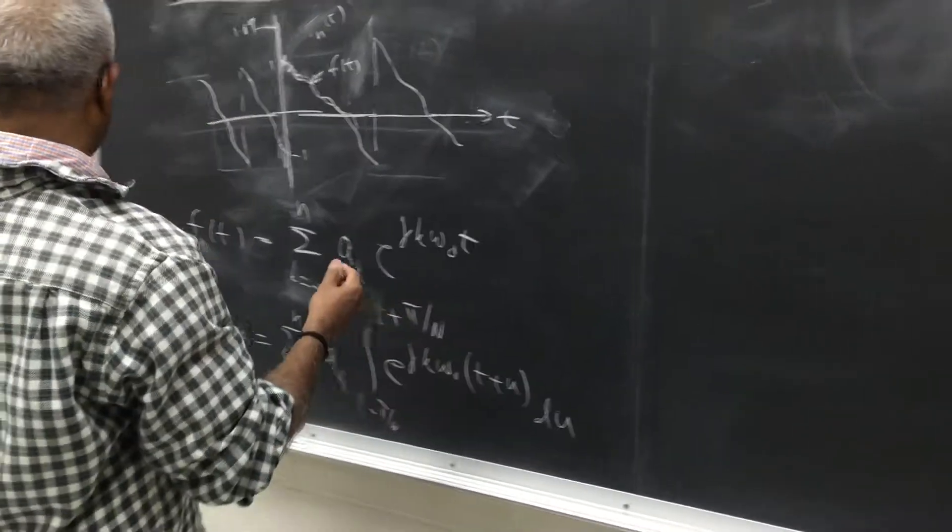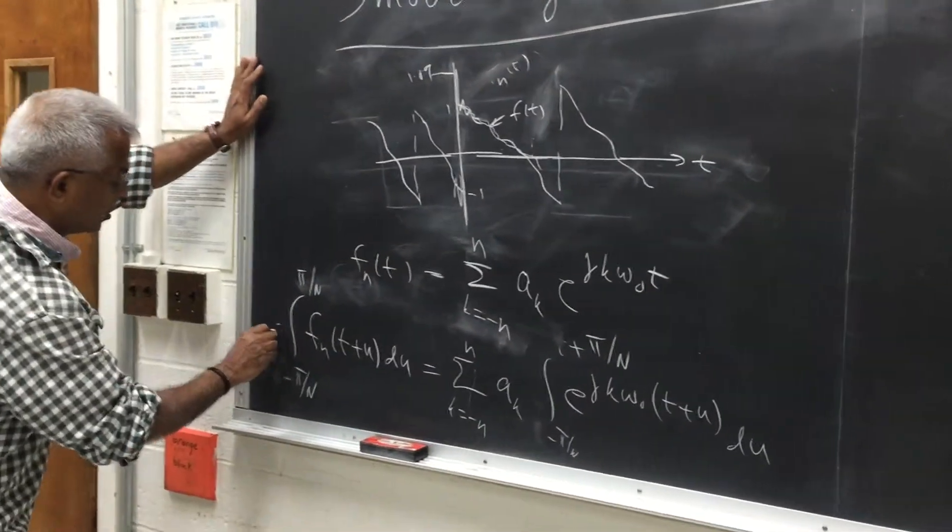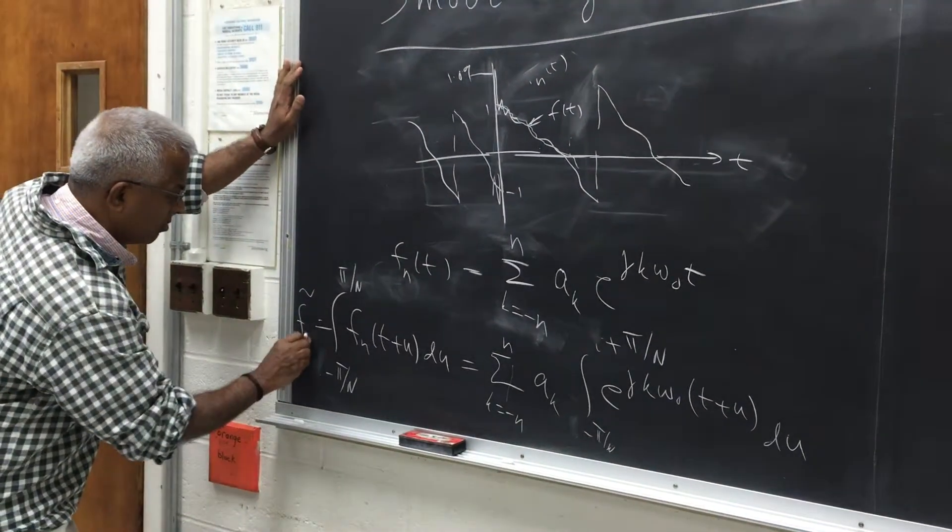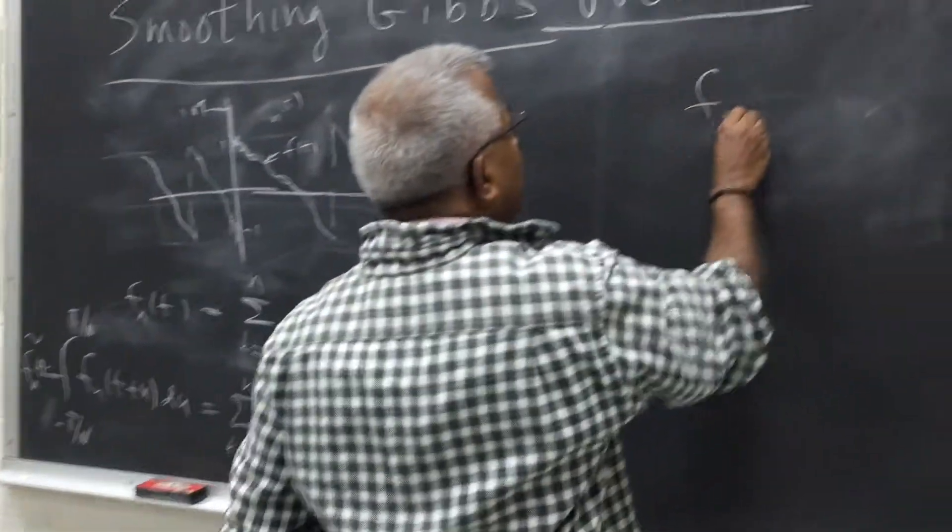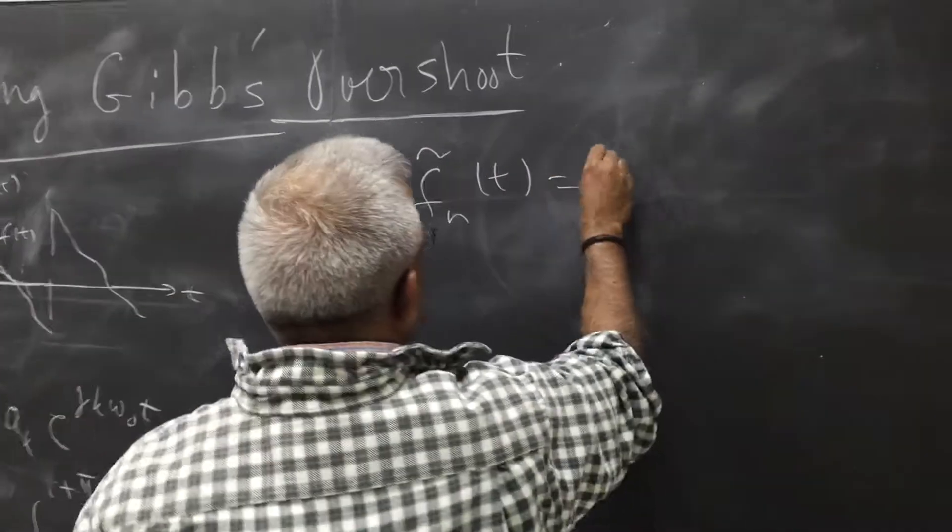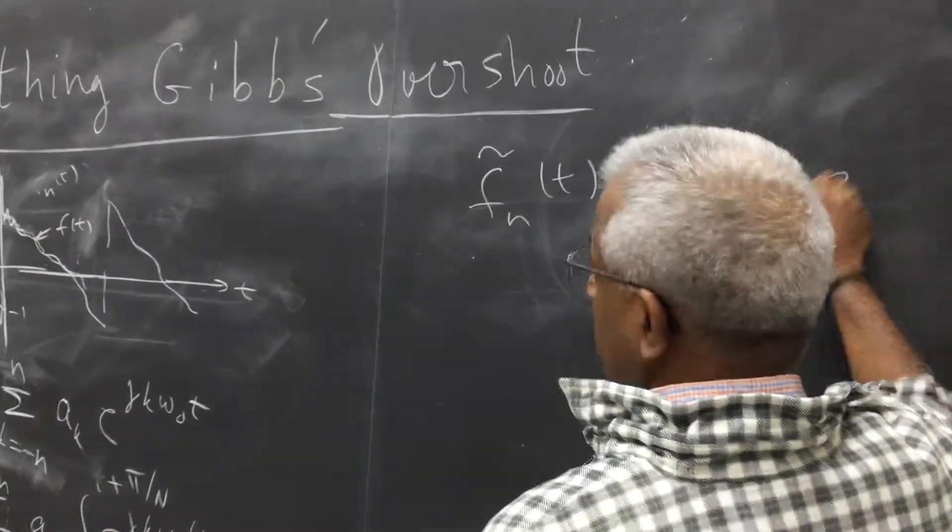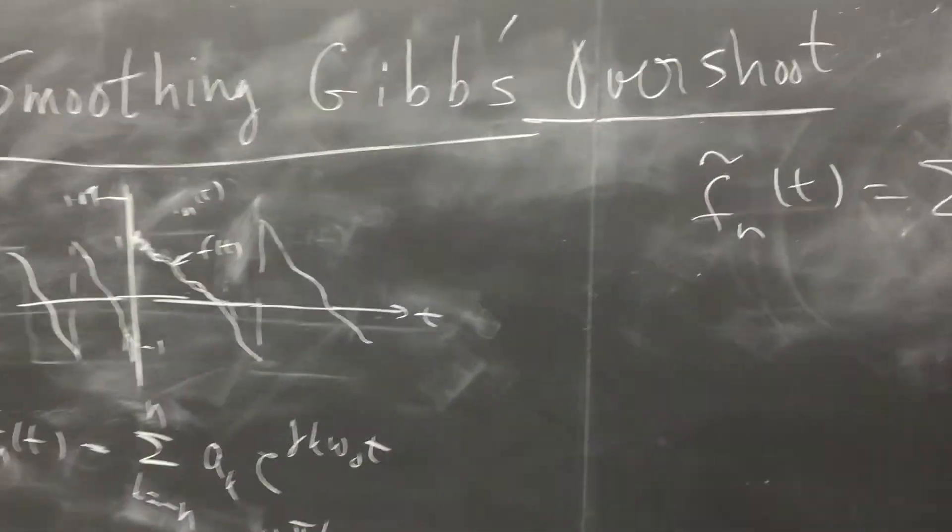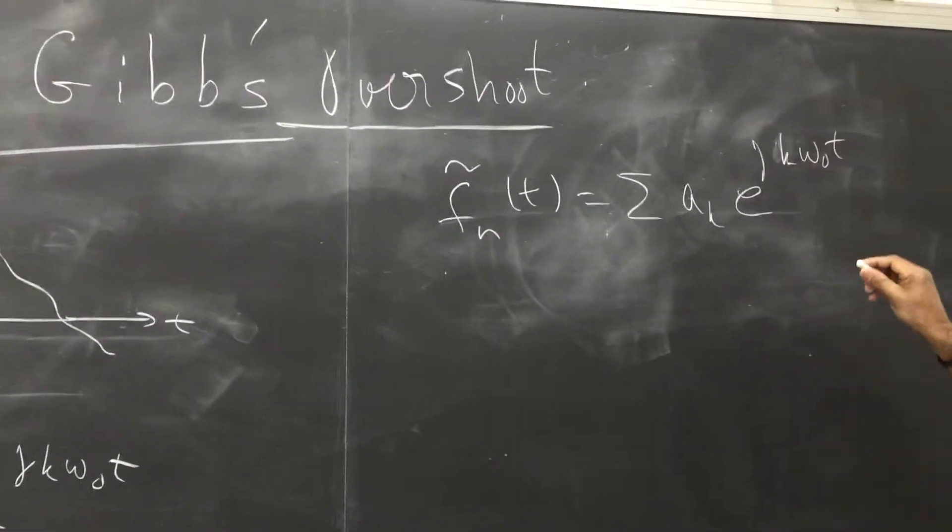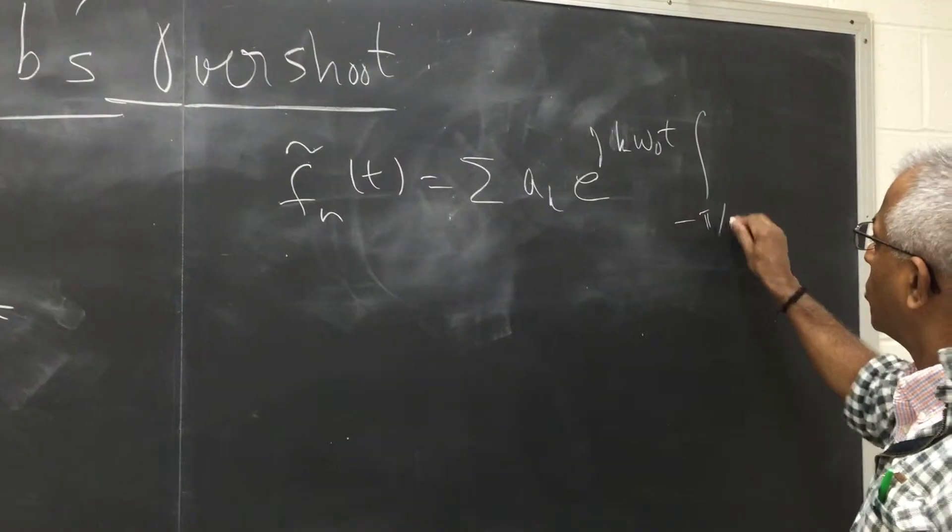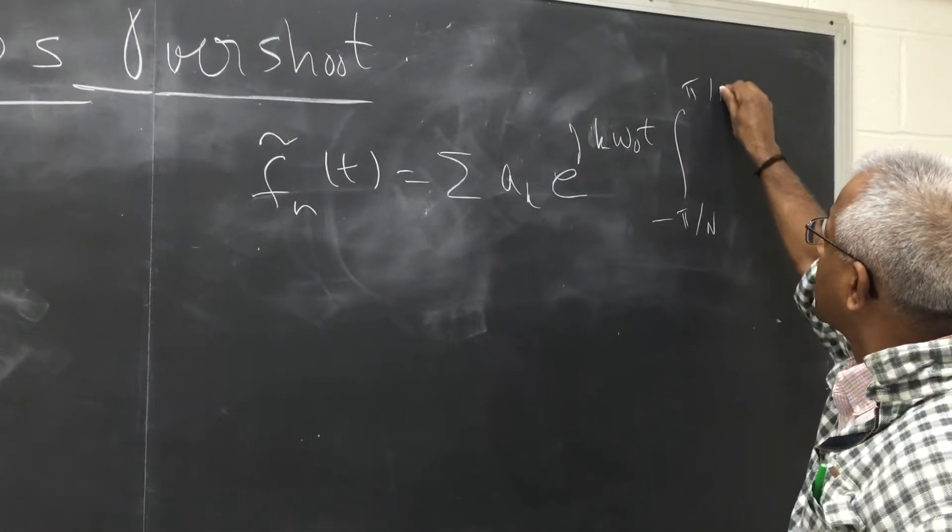So let me call this to be a smooth function f tilde of n(t). So f tilde n(t) is summation a_k e raised to j k omega_0 t, minus pi over n to pi over n.